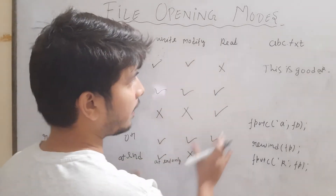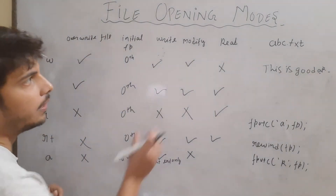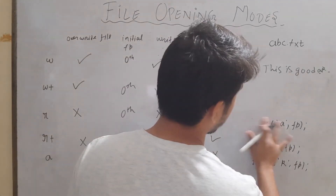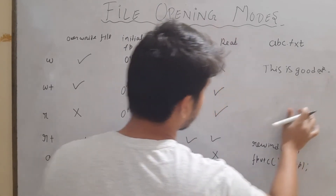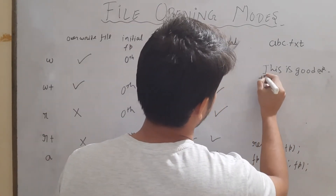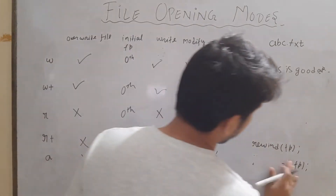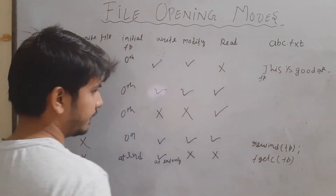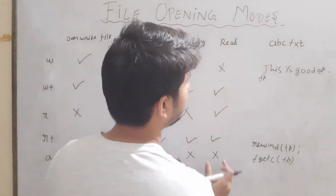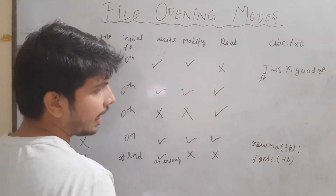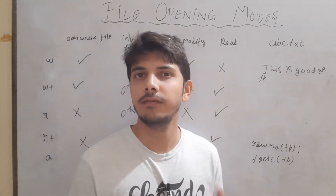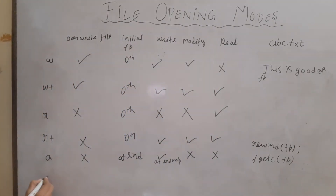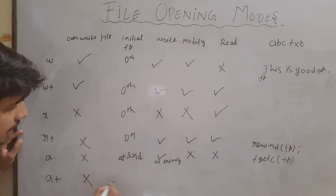In append mode, reading is also not allowed. If I use rewind(fp) to bring fp to the start and then call fgetc(fp), it is not going to return the character. If you try, it will give gibberish text. So in 'a' mode: write is allowed at the end only, modify is not allowed, and read is not allowed.